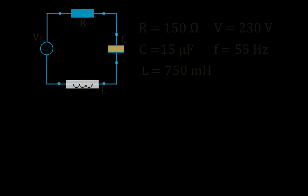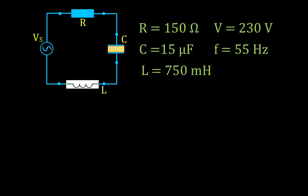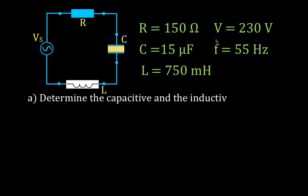In today's video we're going to go over circuit analysis for a series RLC circuit. I previously made a video covering RC circuits and RL circuits. In this video we have an RLC circuit with a 150 ohm resistor, a 15 microfarad capacitor, a 750 millihenry inductor, and an AC voltage source of 230 volts at a frequency of 55 hertz.